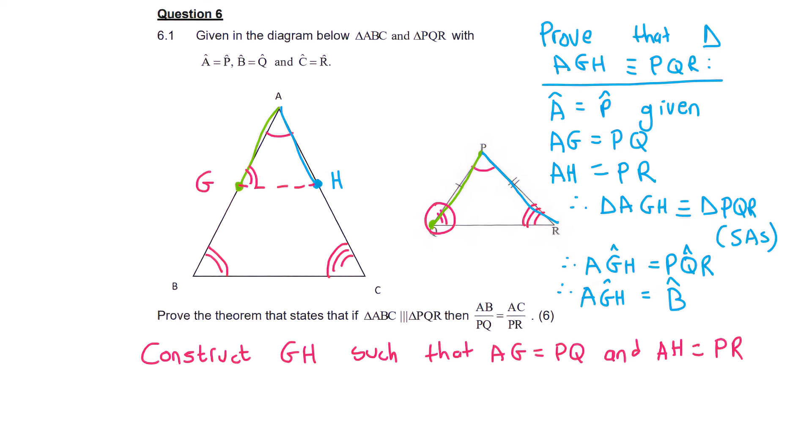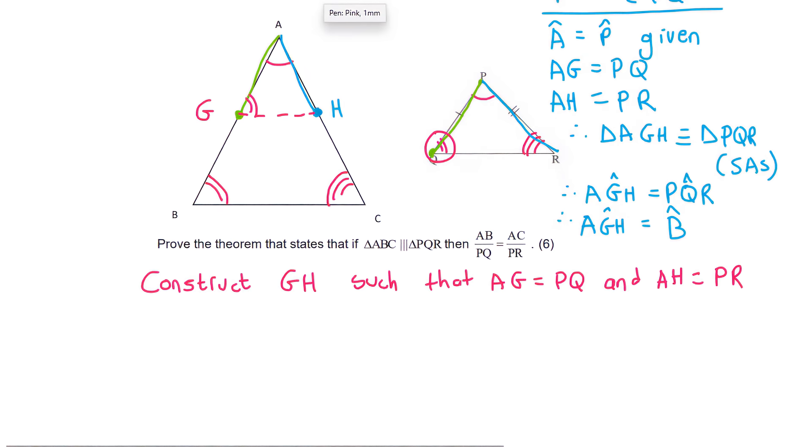So now guys think about this carefully. If these two angles are the same, then that means that this line is parallel to this line because of corresponding angles. So what we can say is that GH is going to be parallel to BC. And the reason is, is that the corresponding angles are equal.